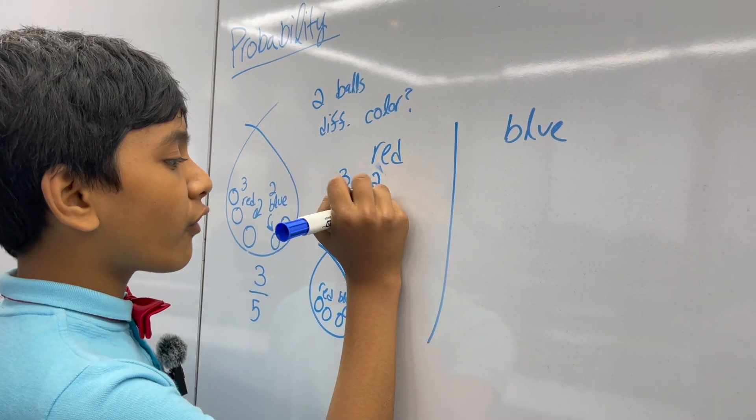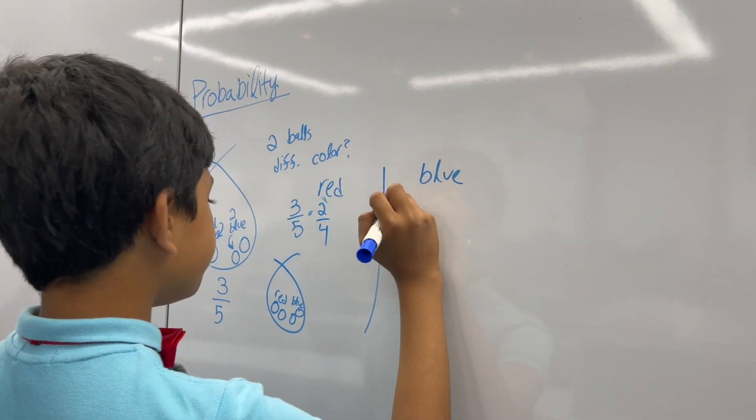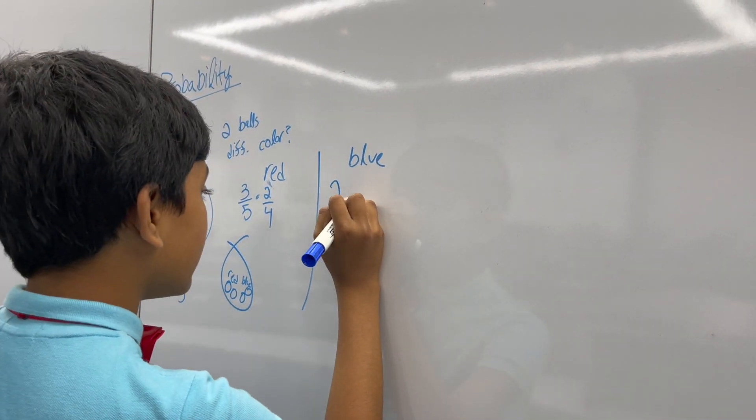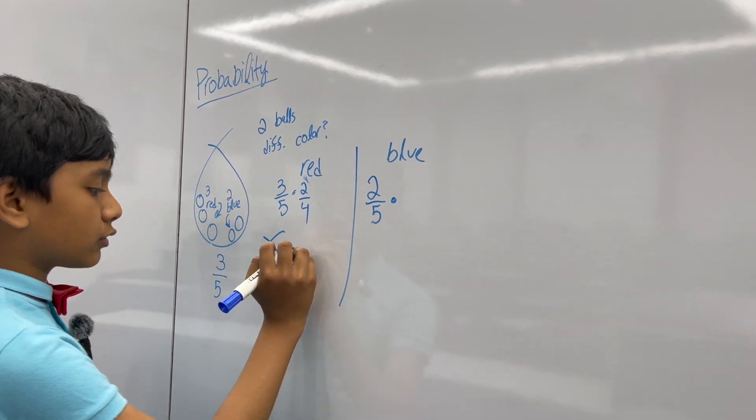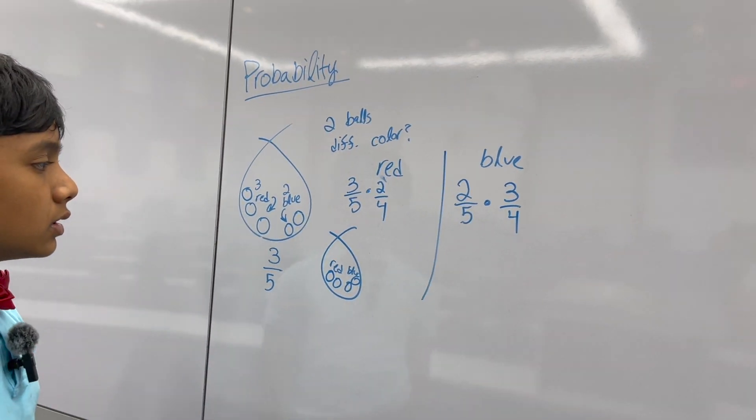So, that means two over four will be the correct answer. Meanwhile, for blue, there is a two in five chance that you pick a blue ball, and then, you multiply that by the chance picking a red ball after that, which is going to be three over four by our same principle.